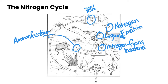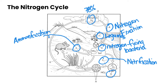Once we've got it in the form of ammonia, other bacteria in the soil are going to convert the ammonia into a product called nitrate. This process, label F, is called nitrification, and it actually happens in two steps. First, the ammonia gets converted into nitrite, and then a different set of bacteria converts it into nitrate.